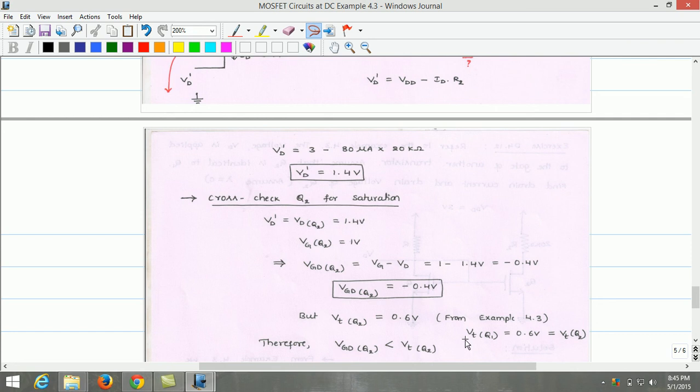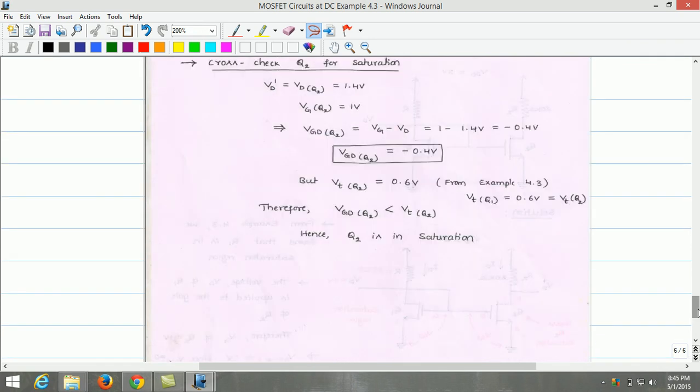That is, threshold voltage of Q1 is also equal to threshold voltage of Q2 transistor, that is 0.6 volts. Therefore, Vgd of Q2 transistor is less than the threshold voltage of Q2 transistor, and hence Q2 operates in saturation region.